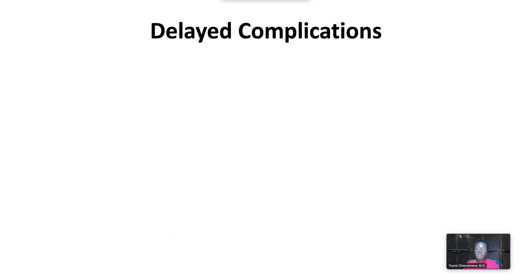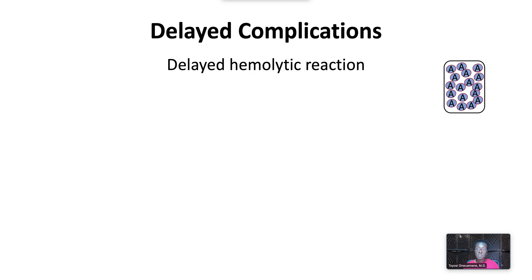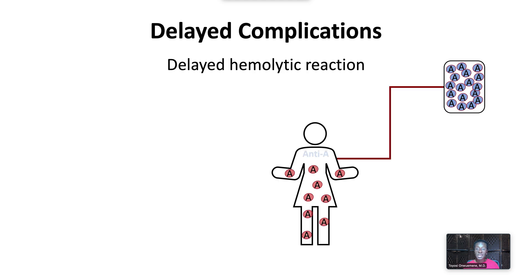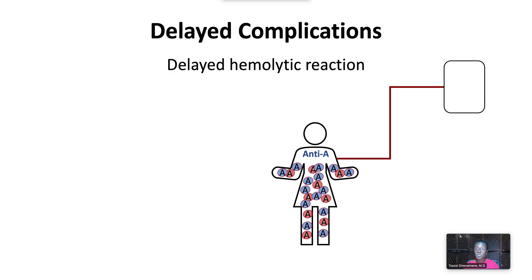Finally, we'll address delayed transfusion complications. These include delayed hemolytic transfusion reactions, which occur when patients have antibodies to non-ABO blood group antigens that are not detectable at the time of transfusion. However, once the patient is transfused, an amnestic response occurs in which the quiescent antibody increases rapidly, causing extravascular hemolysis of transfused cells about one to two weeks after transfusion. Patients present with fever, anemia, and jaundice. A repeat DAT will be positive.